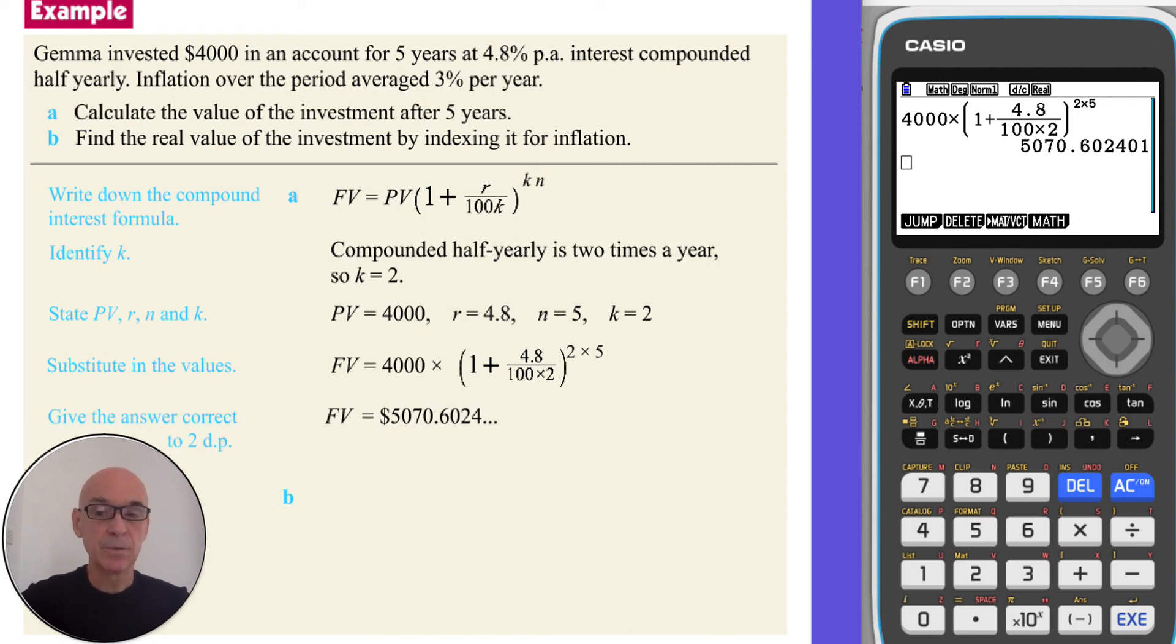And as it's money, we should give the answer correct to two decimal places. So after five years, the value of the investment is $5070.60.